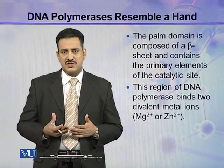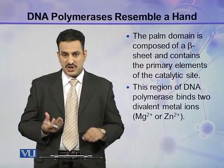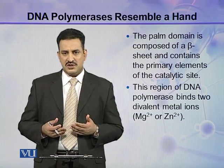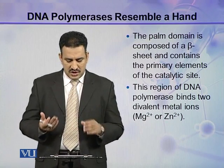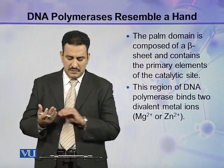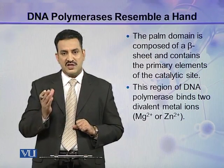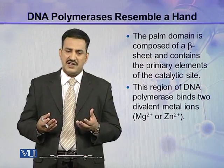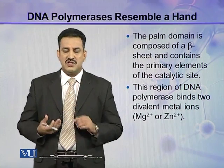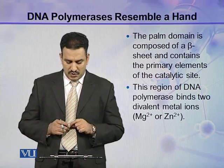The palm domain is composed of a beta sheet — the beta pleated sheet found in protein structure. This palm domain contains the primary elements of the catalytic site of DNA polymerase. In the active site of the enzyme, there is one binding site and one catalytic site, and the palm contains the primary elements of that catalytic site.